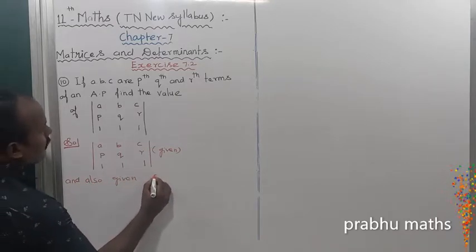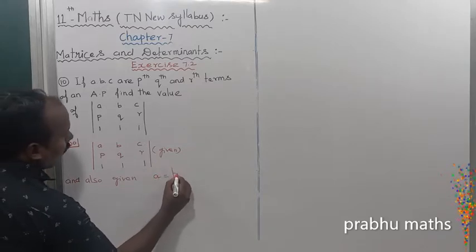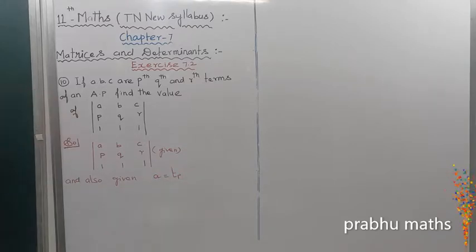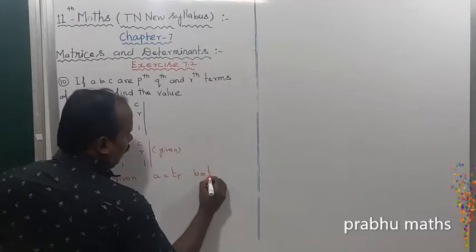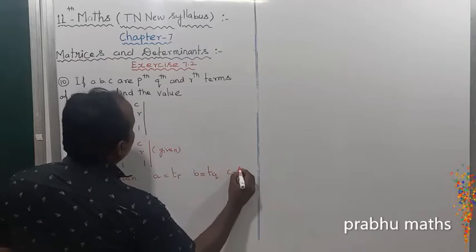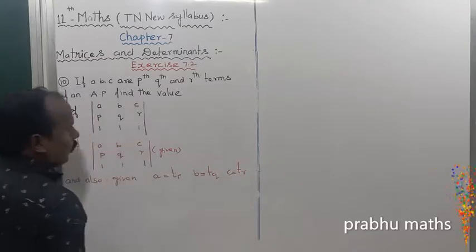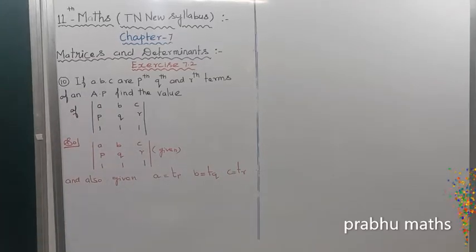a is equal to the p-th term of the AP, b is equal to the q-th term, and c is equal to the r-th term. Okay, so a means the first term, l means the last term.